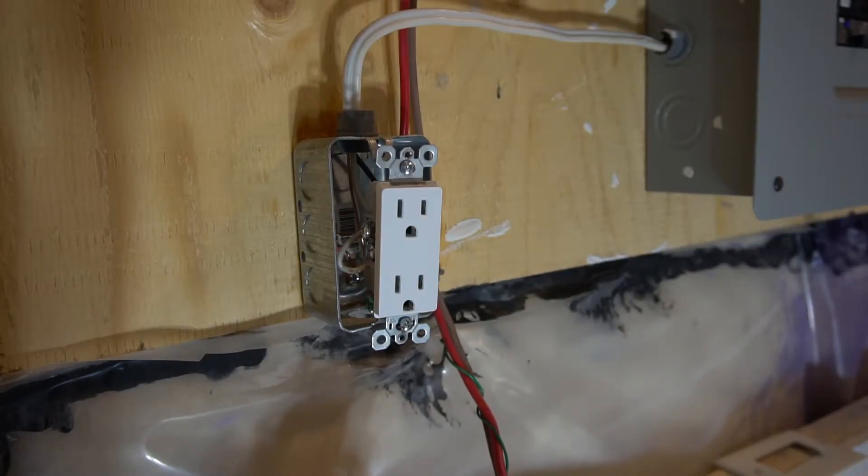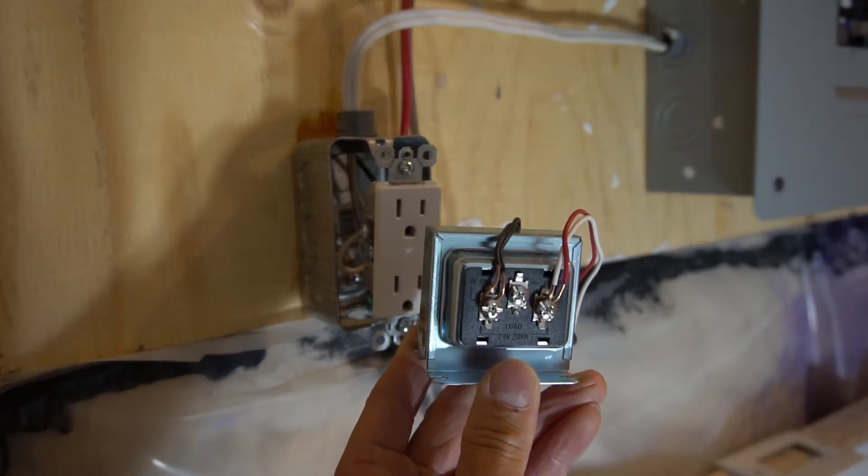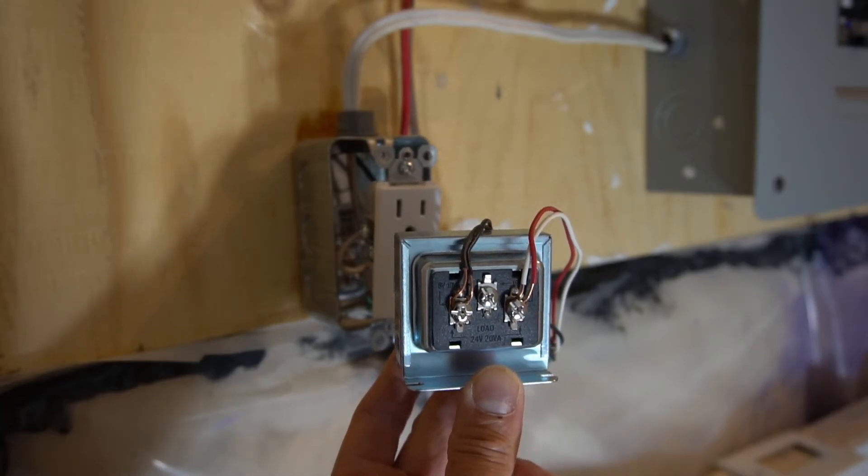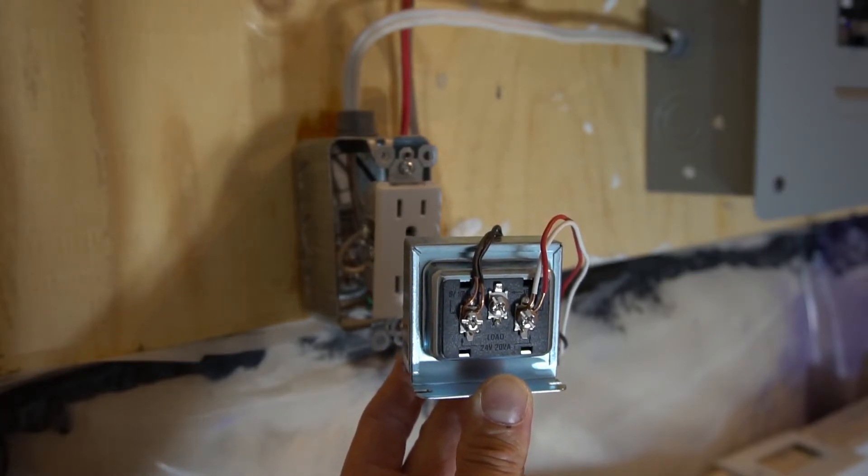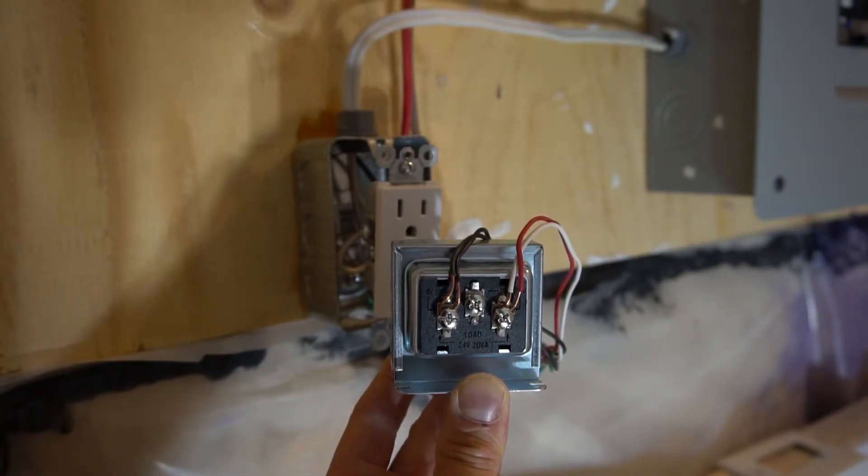Now for our next step, we will need to install a step down transformer from 120 volt to 24 volts. That's what we use in Canada and USA.